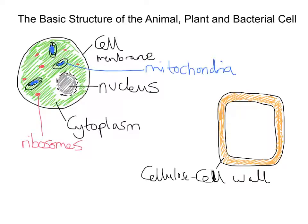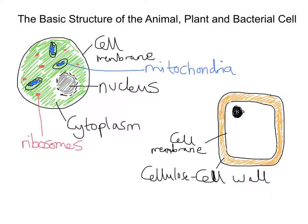We also have this black line that I've drawn on the inside here — that is our cell membrane. So there's still a cell membrane in this plant cell. And we'll put in a nucleus here as a big black dot. There's our nucleus.